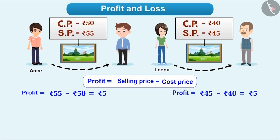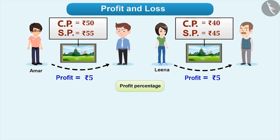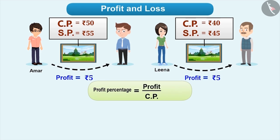No, we cannot say this, because even though there is a profit of rupees 5, Amar has earned a profit of 5 on cost price of 50, whereas Leena has earned a profit of rupees 5 on cost price of 40. Since cost prices are not equal in both cases, we cannot say that both get equal profit. Then how are we going to find out who has got more profit? One way to do this is to express the profit as a percentage. We know that to represent any fraction in percentage, we multiply it by 100. Therefore, profit percentage is equal to profit by cost price into 100.